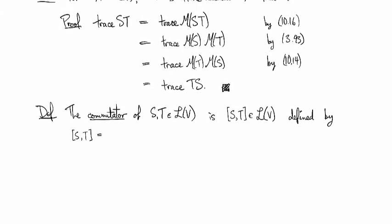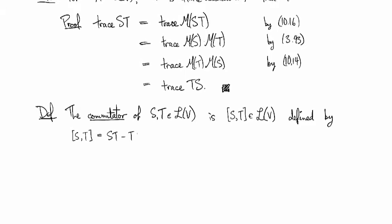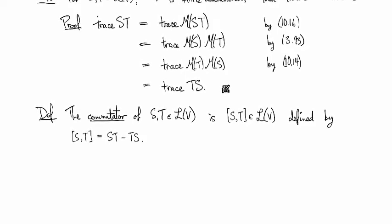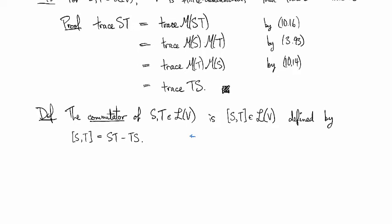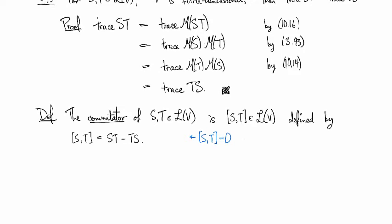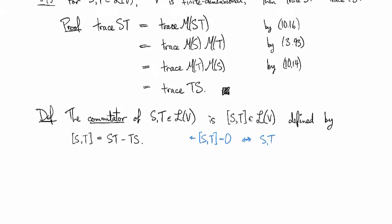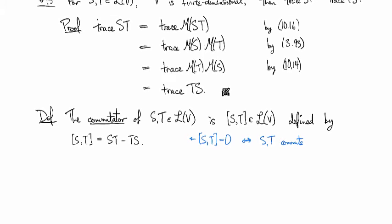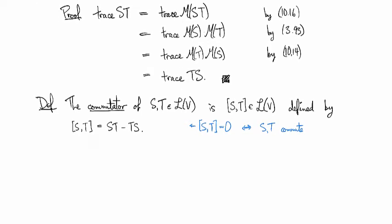It's defined by: the commutator of S and T is ST minus TS. You can see that the commutator is zero if and only if S and T commute. This is used a lot in operator theory.